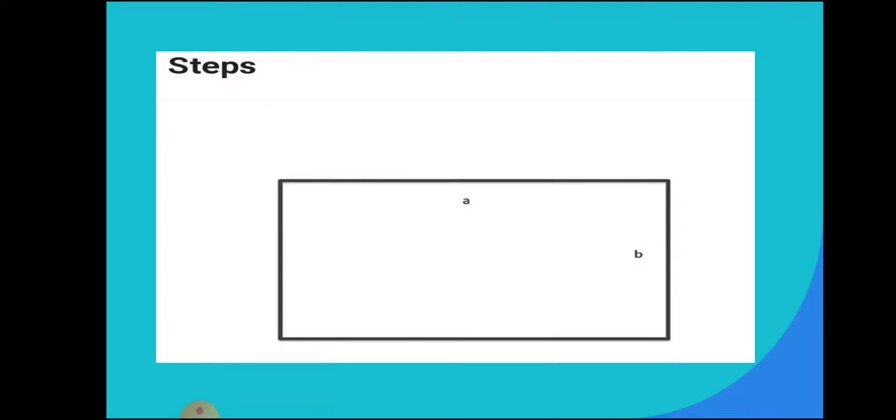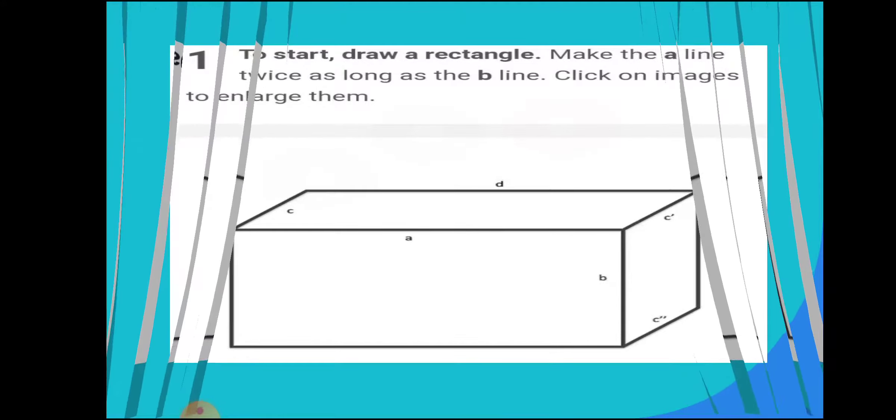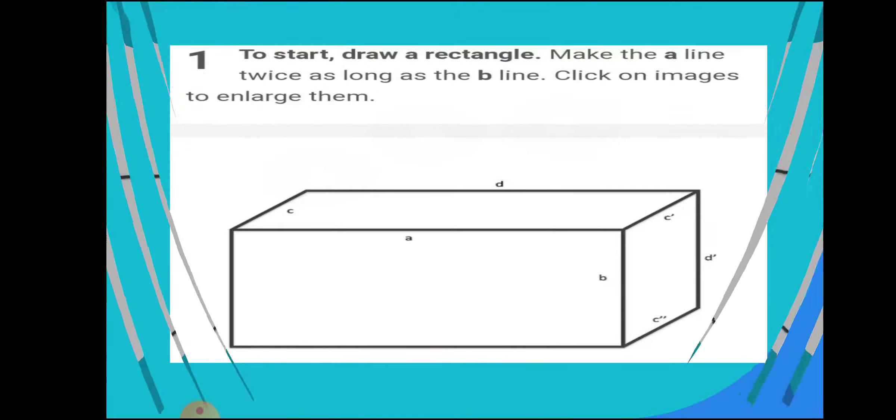Now follow the steps students see here. You have to draw rectangular shape for tank. To start, draw a rectangle. Make the A line twice as long as the B line. Click on images to enlarge them.